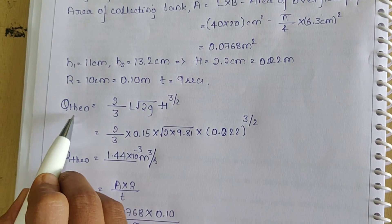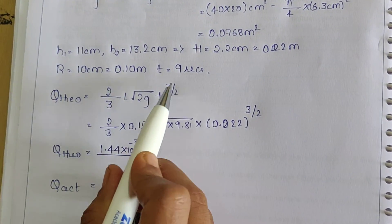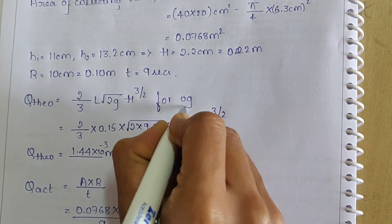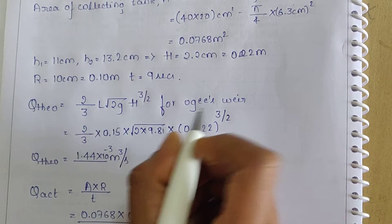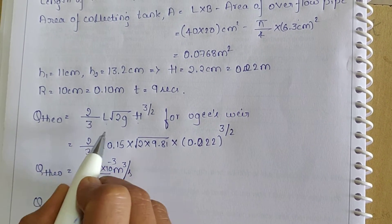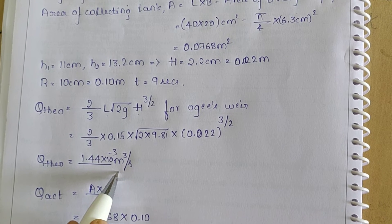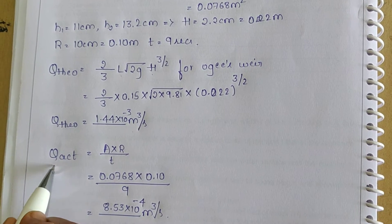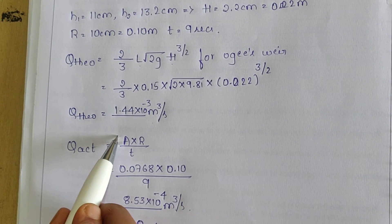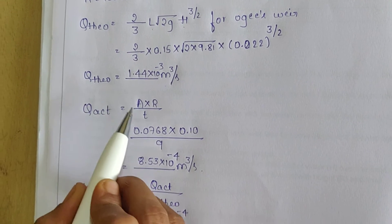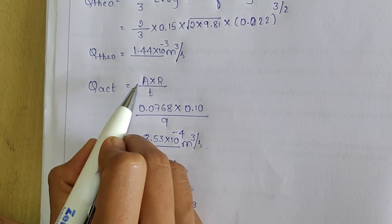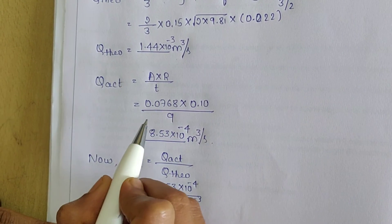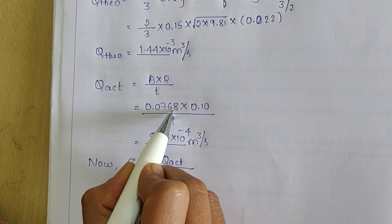Therefore, the theoretical discharge is calculated as (2/3) × L × √(2g) × H^(3/2) for Ogee's weir. Substituting the values of H and L in this equation, we get the theoretical discharge as 1.44 × 10⁻³ m³/s. The actual discharge is the volume of water collected in the collecting tank divided by the time taken, where volume equals the area of the collecting tank multiplied by the depth of water collected, which is 0.0768 m².